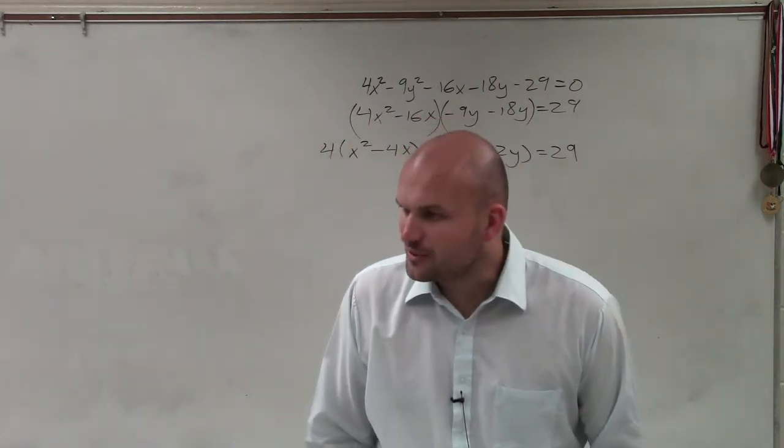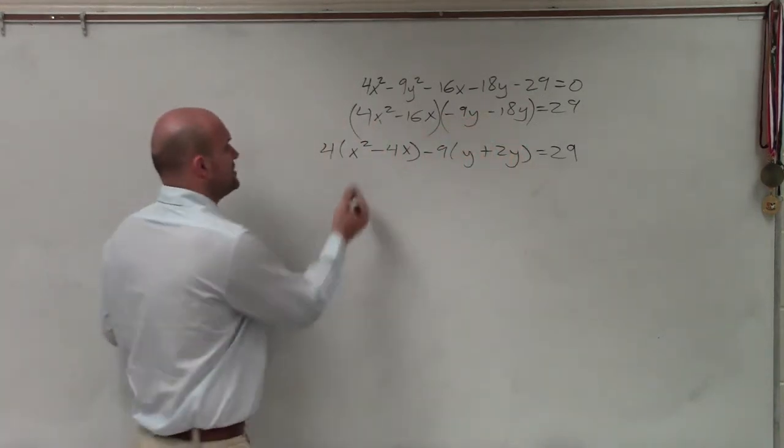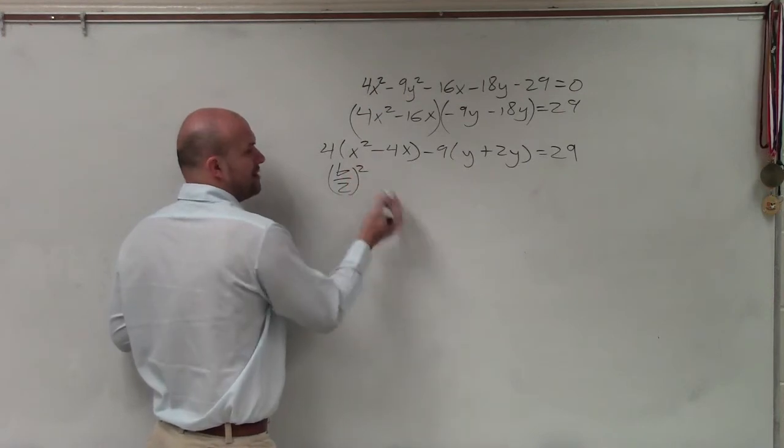Now, this is much better than your homework quiz. Now, I just need to create my perfect square trinomials. I need to take b divided by 2 and square it.